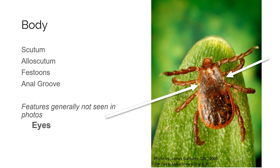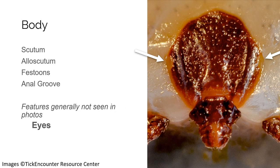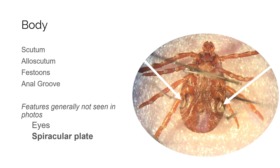The next two characteristics are generally not visible from photos. Eyes can be either present or absent — here you can see them in a photo of a brown dog tick. The spiracular plates are on the ventral surface of the tick below the last pair of legs; this is how the tick exchanges gases or respires. The spiracular plates can have either large goblets or small goblet spiracles within. The large goblet spiracles appear bumpy while the small goblets appear smooth.